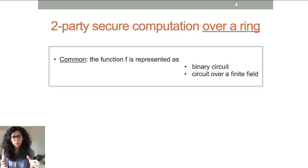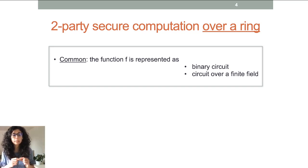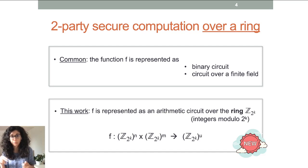There are many MPC protocols that solve this problem. Usually these protocols consider the function F as a binary circuit — like Yao's scheme — or circuits over a finite field. In this work, we take a different approach and assume that F is represented as an arithmetic circuit, but over a ring, specifically the ring of integers modulo 2 to the k, Z2k for short.